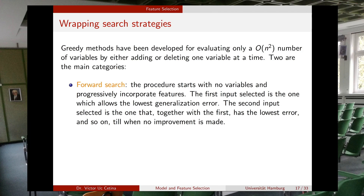In the first approach, called forward search, the procedure starts with no features at all and progressively incorporates one feature at a time, always calculating or estimating the error for the model using these different subsets of features.